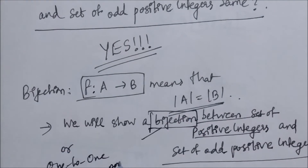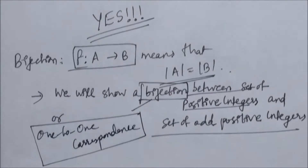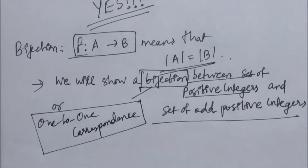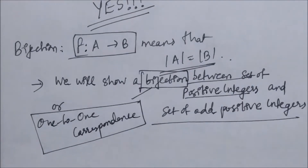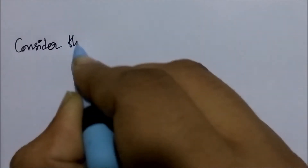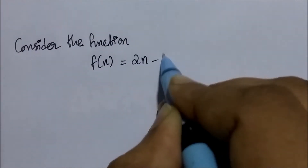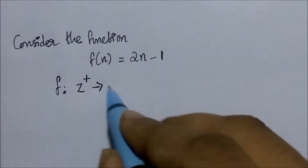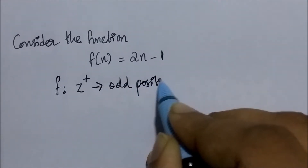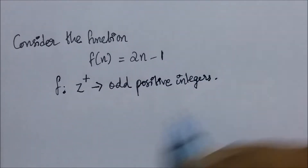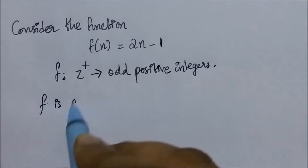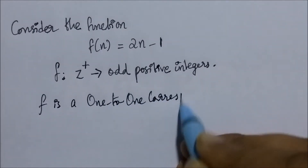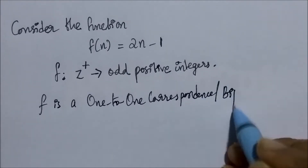If we show that such a bijection exists, it means that the cardinality of the set of positive integers is the same as the cardinality of the set of odd positive integers. Consider the function f(n) = 2n − 1, where f is a function from the set of positive integers to the set of odd positive integers. Now f is a one-to-one correspondence, or a bijection, and we have to prove it.